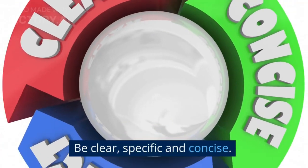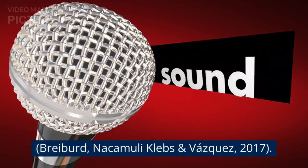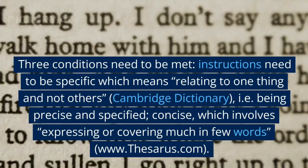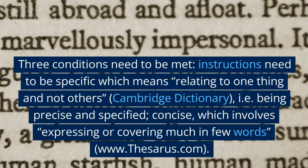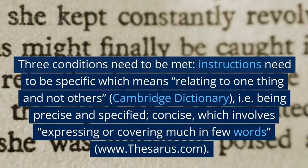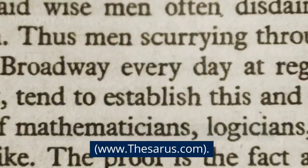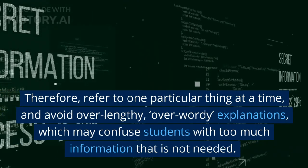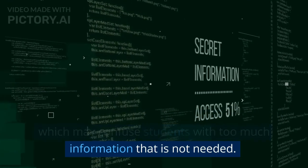Step 2: Be clear, specific, and concise (Bribert, Nakamuli, Klebs and Vasquez, 2017). Three conditions need to be met. Instructions need to be specific — relating to one thing and not others (Cambridge Dictionary), i.e. being precise and specified. Concise, which involves expressing or covering much in few words. Also, your instructions need to be easy to understand. Therefore, refer to one particular thing at a time, and avoid over-lengthy, over-wordy explanations, which may confuse students with too much information that is not needed.